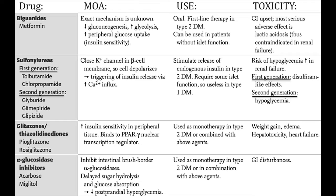There are two generations of sulfonylureas. The first generation is rarely used today and includes tolbutamide, tolazamide, and chlorpropamide. The mainstay thing to know about these drugs is they are associated with disulfiram-like reactions — meaning if you take these drugs with alcohol, you can have headaches, nausea, and vomiting. Of note, chlorpropamide is associated with SIADH.